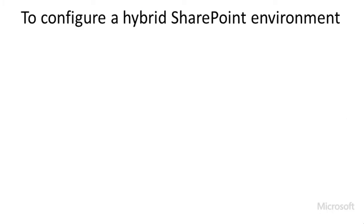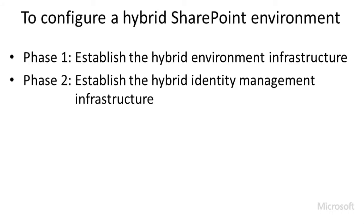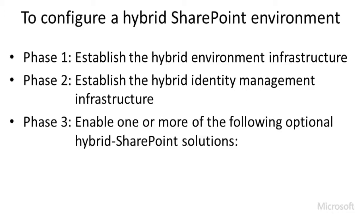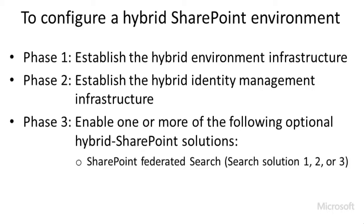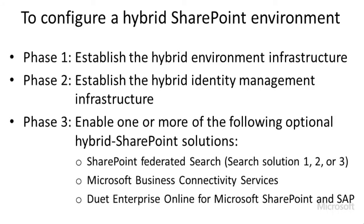Setting up the base configuration for the hybrid SharePoint environment will be accomplished in two phases, each of which must be implemented in order to move on to Phase 3. Phase 1 will establish the hybrid environment infrastructure, and Phase 2 will establish the hybrid identity management infrastructure. After completion of those two phases, in Phase 3 we can implement one or more optional hybrid SharePoint solutions, including SharePoint Federated Search, Microsoft Business Connectivity Services, and Duet Enterprise Online for Microsoft SharePoint and SAP.